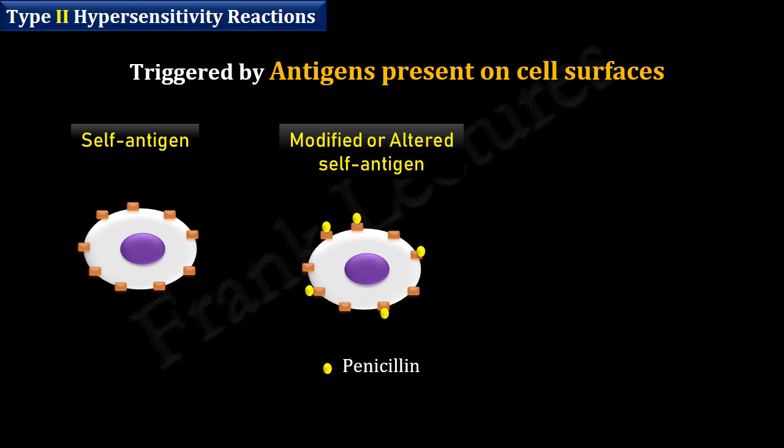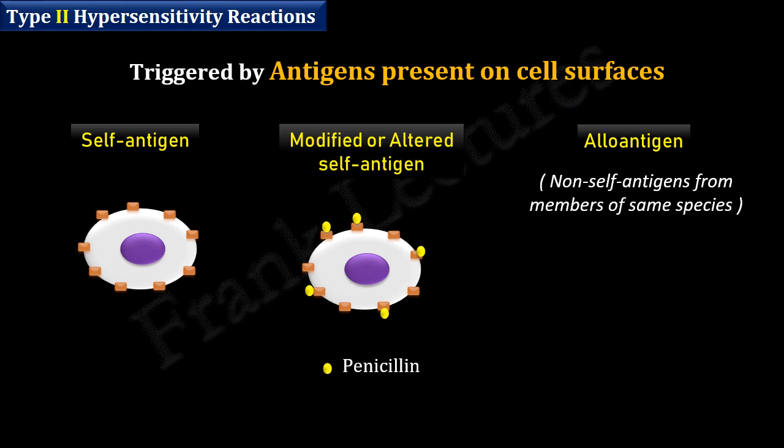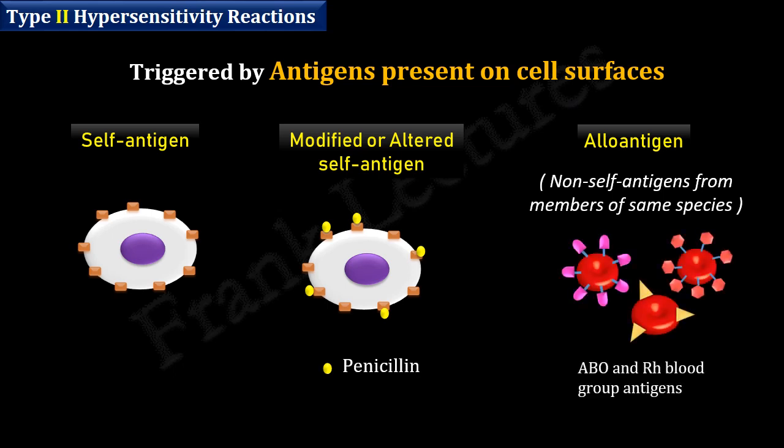Antigens can also be allo-antigens. Allo-antigens are genetically determined and are present in some individuals of a species but not all. They are non-self antigens from members of the same species — for example, ABO and RH blood group antigens in blood transfusion reactions.